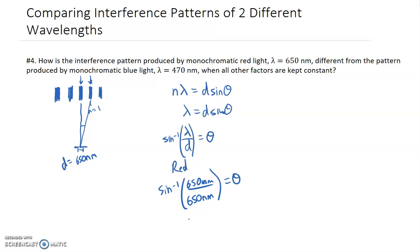And so in this case, sine inverse of 1 is 90 degrees. So we get an angle of 90 degrees if, in fact, the distance between the slits was equal to the wavelength.